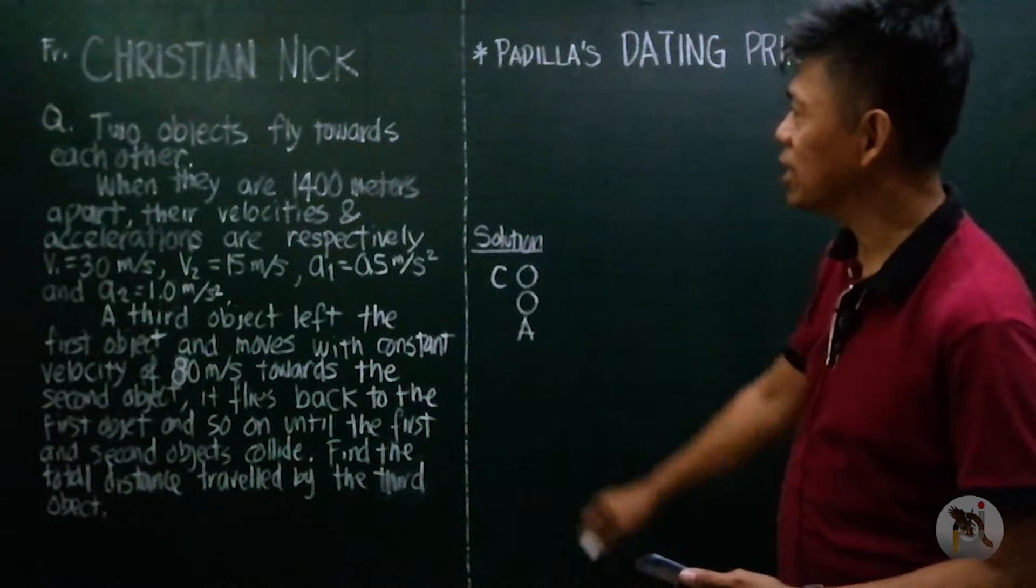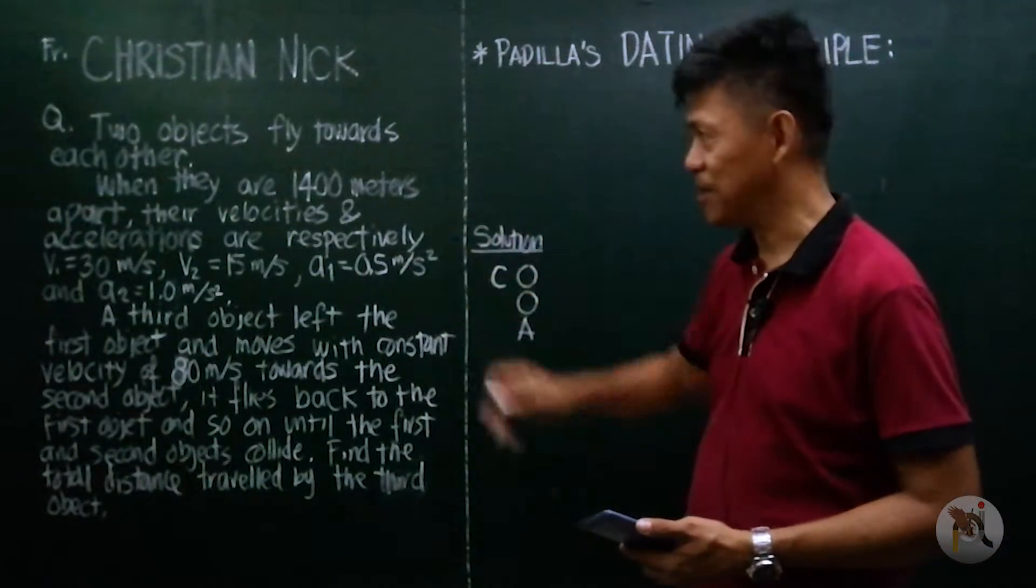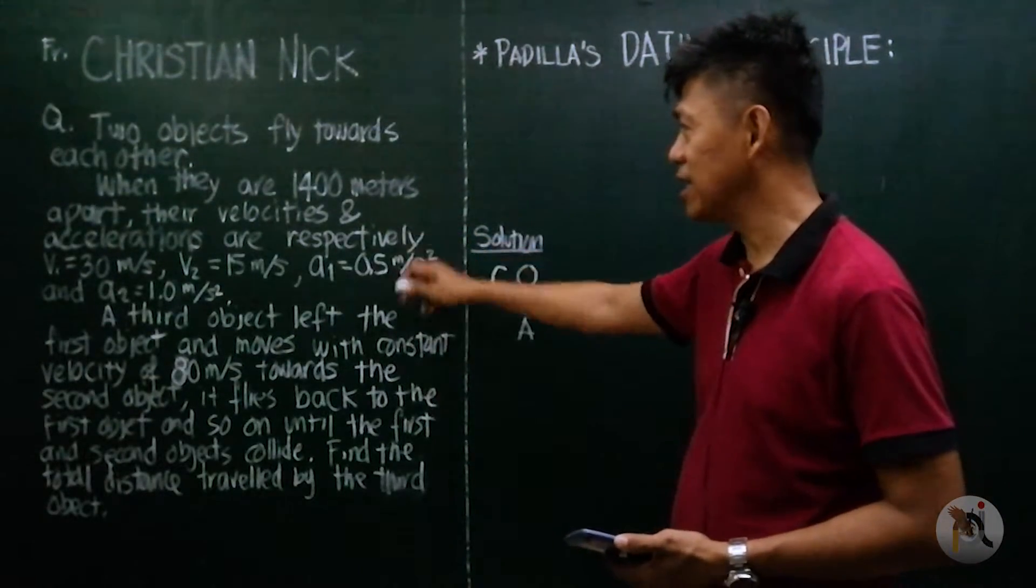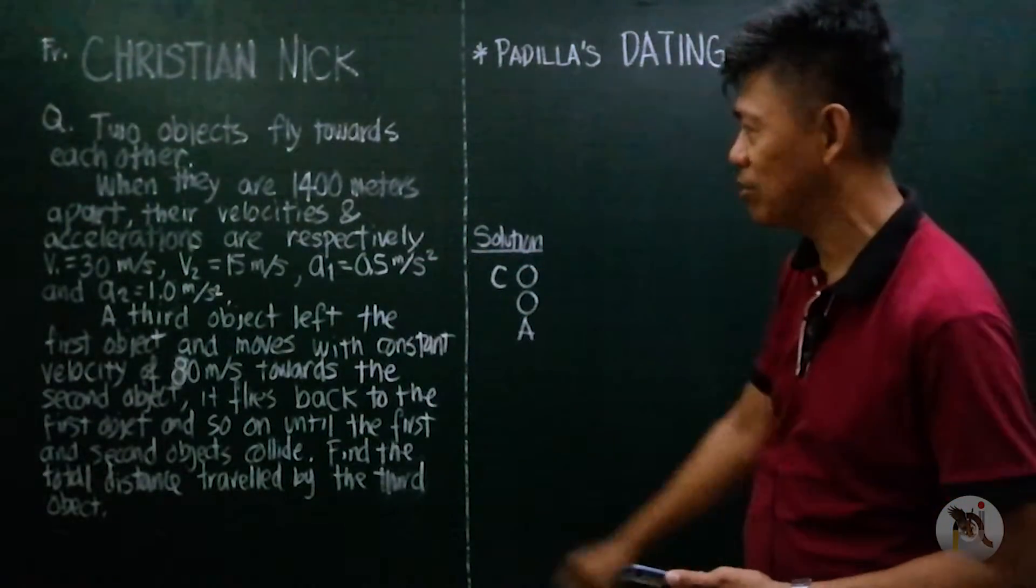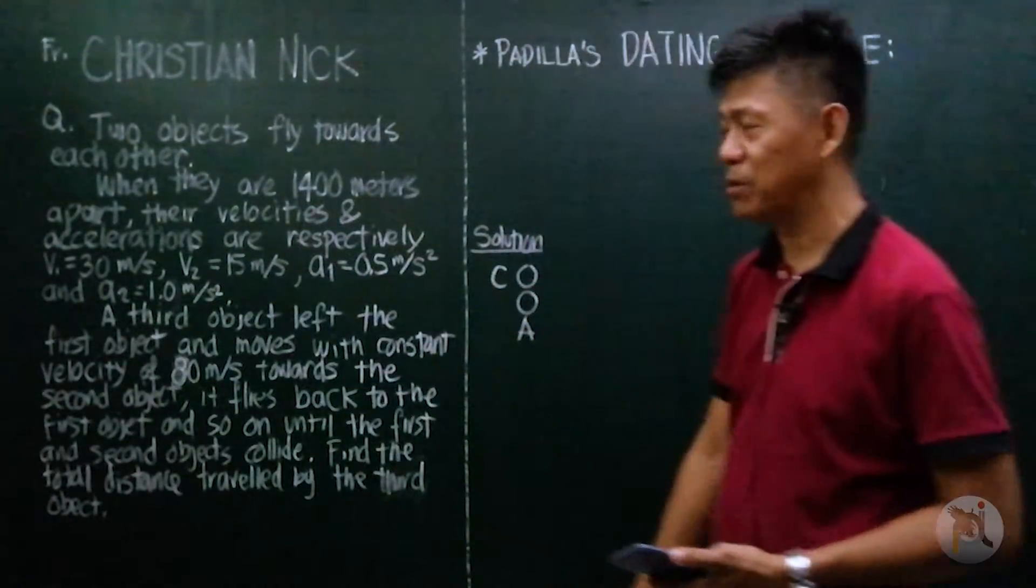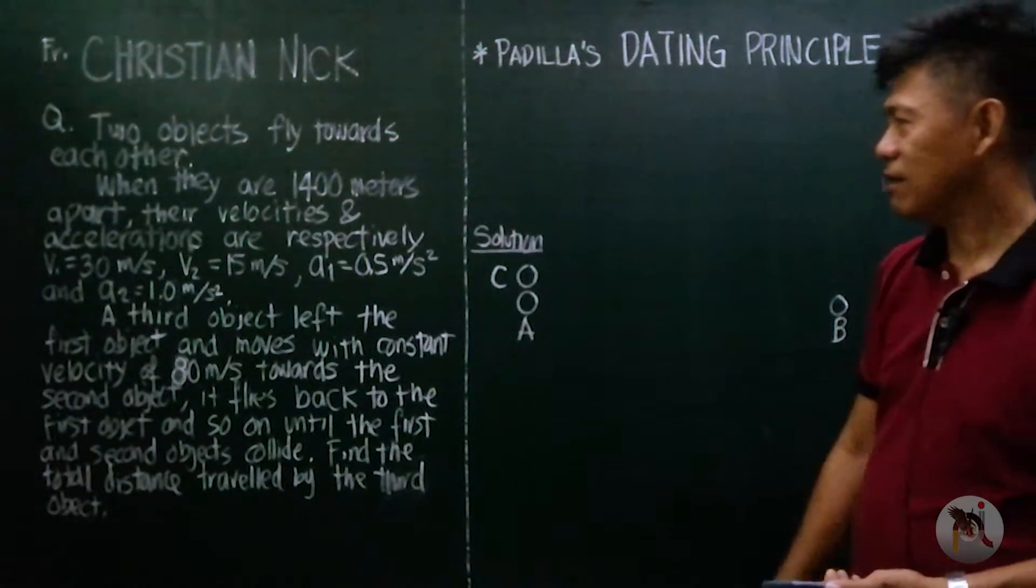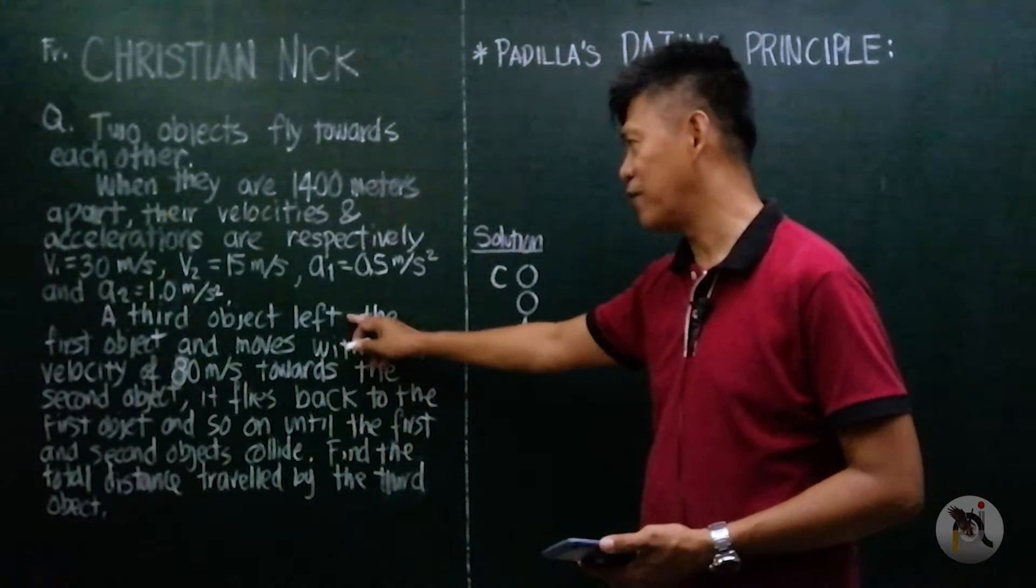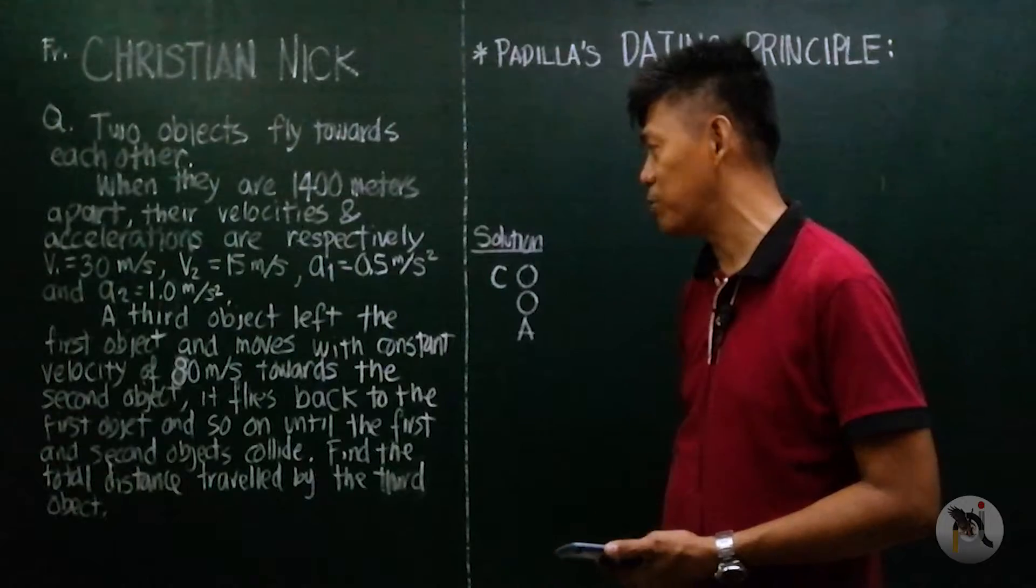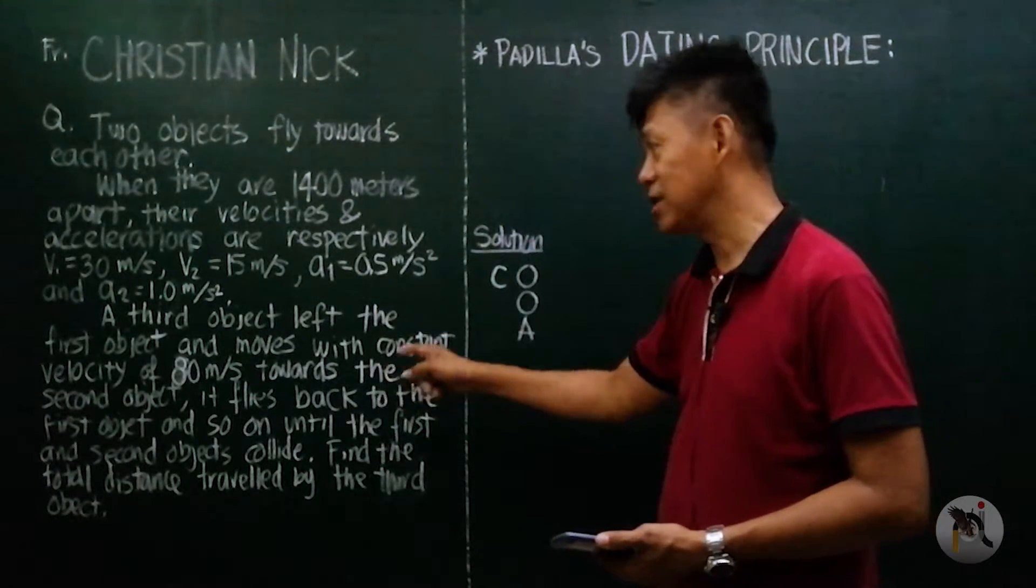Two objects fly towards each other. When they are 1400 meters apart, their velocities and accelerations are respectively 30 and 15, 0.5 and 1 meter per second squared. A third object left the first object and moves with constant velocity of 80 meters per second towards and backwards.